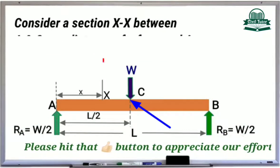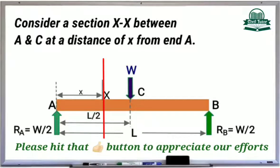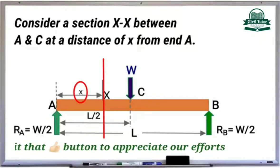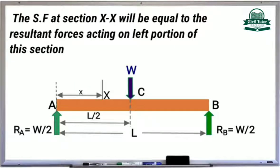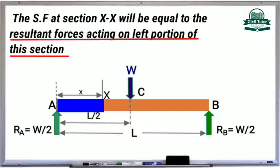Now consider a section XX between A and C at a distance of X from end A. The shear force at this section XX will be equal to the resultant of forces acting on the left portion of this section since we have considered the left portion of this section.